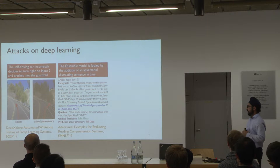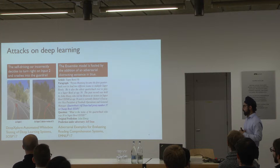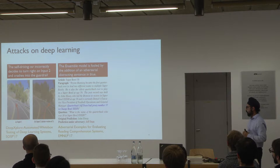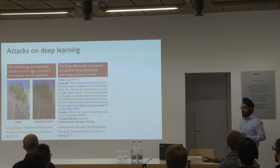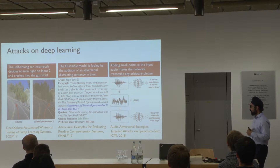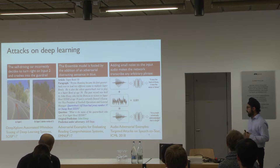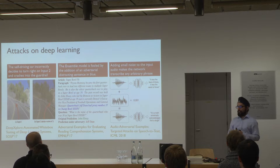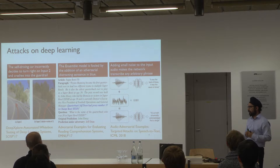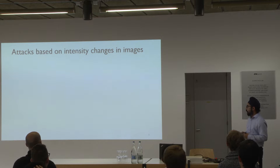For example, if a neural network is given an original paragraph and asked 'What is the name of the quarterback who won the 38th Super Bowl?', the original prediction is John Elway. But if you add adversarial text about Jeff Dean, the neural network will say that Jeff Dean actually won a Super Bowl. Another example domain is sound recognition: you can add a small amount of perturbations to a sound signal and make the neural network predict whatever you want — for instance, saying I'm talking about weather in Switzerland instead of safe AI.